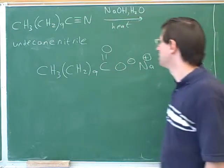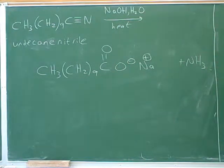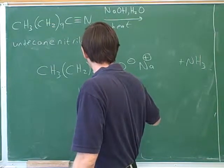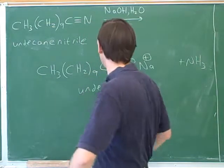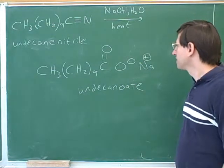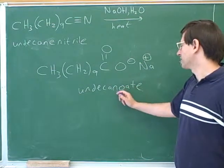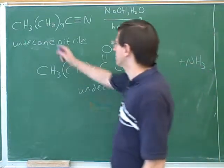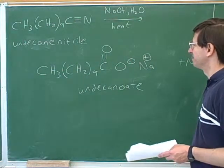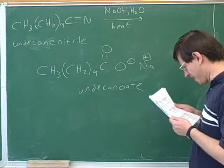So what would this be? That would be undecanoate. Good. We've seen that carboxylates have the oate suffix like esters. In this case, we don't use an E because the suffix starts with a vowel. Here we use the E because it starts with a consonant. That's probably not a big deal, but for some reason that pleases it.